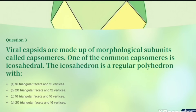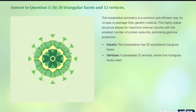Question number three: viral capsids are made up of morphological subunits called capsomers. One common structure is the icosahedron. The icosahedron is a regular polyhedron — it consists of 20 equilateral triangular faces and 12 vertices, where five triangular faces meet at each vertex. The correct option is three.